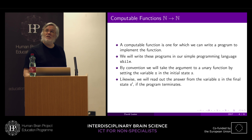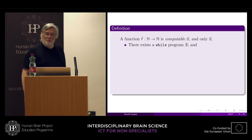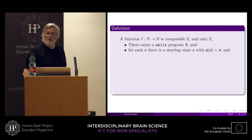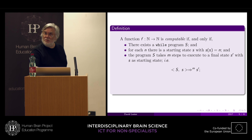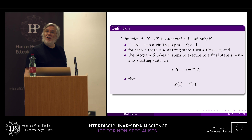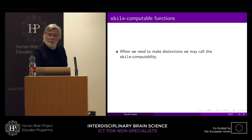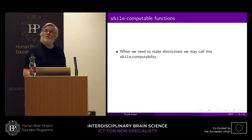As a result of executing the program, a starting state s is turned into a final state s-dashed. A function f is computable if and only if you can write a program S, and for any value n set up in the starting state so that variable x has value n, it takes m steps to execute to a final state s-dashed — a finite number of steps — and at the end the value of variable x equals the function applied to n. That's our definition of a computable function from natural numbers to natural numbers. You can call this 'while computability' because it's defined in terms of the while programming language.